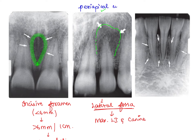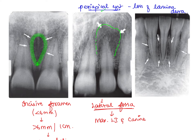To differentiate a periapical cyst from the lateral fossa: in a periapical cyst, we find a carious lesion or radiolucency in the coronal aspect close to or involving the pulp, with loss of lamina dura. Loss of lamina dura indicates periapical pathology. If the lamina dura is intact, the radiolucency is the lateral fossa. Additionally, a periapical cyst appears well-defined with corticated borders and shows equal expansion.